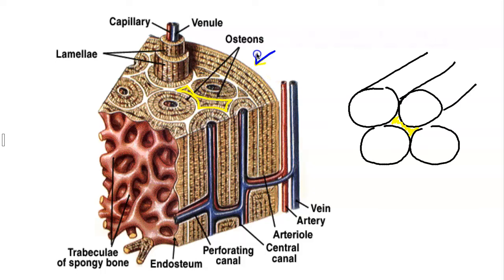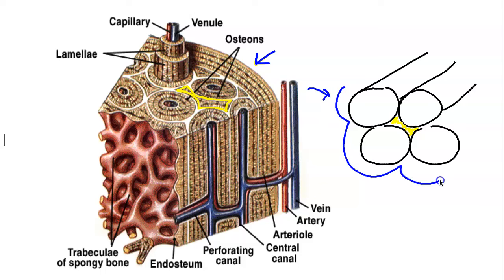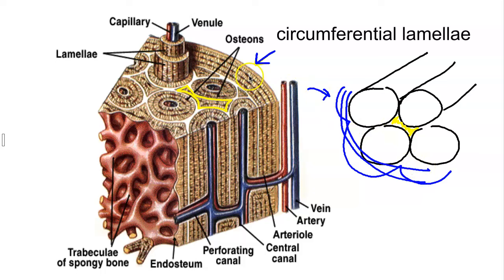Also notice that the outer periphery of bone is smooth. Because it's made out of osteons, what happens around the outer periphery is that there are lamellae that will run the circumference of the entire bone. They're called circumferential lamellae, and we can see the circumferential lamellae in this diagram running around the entire circumference of the bone and making the outer periphery smooth.